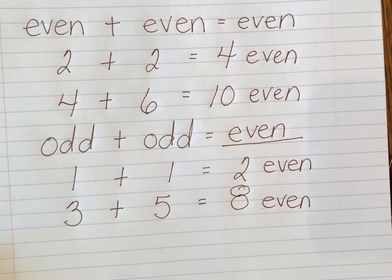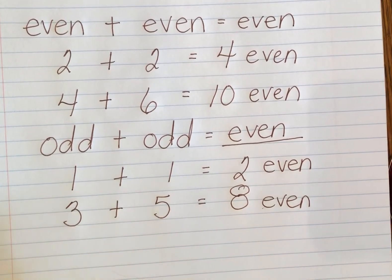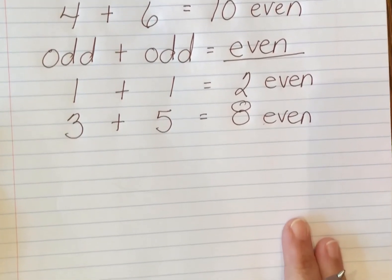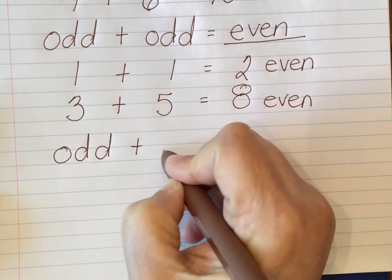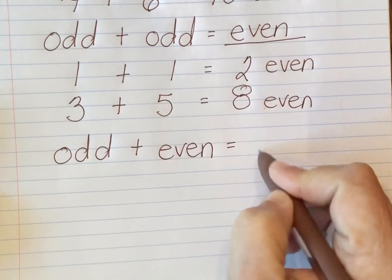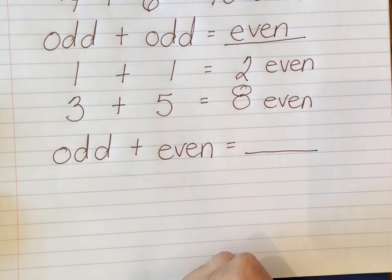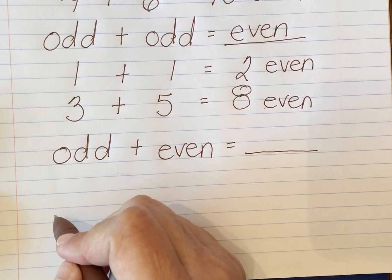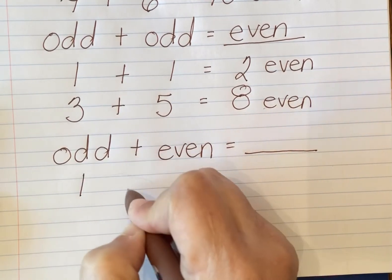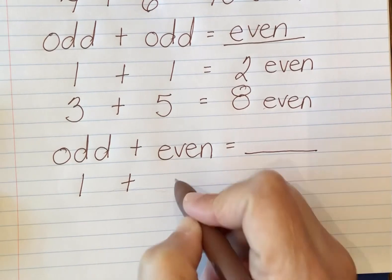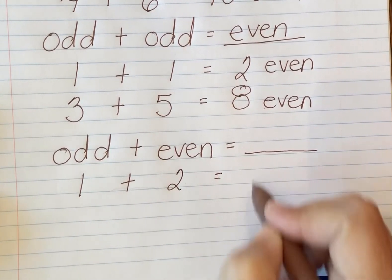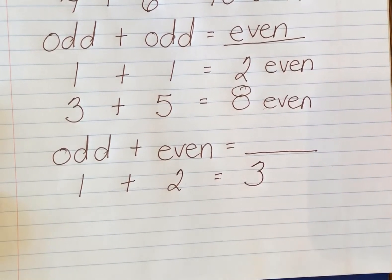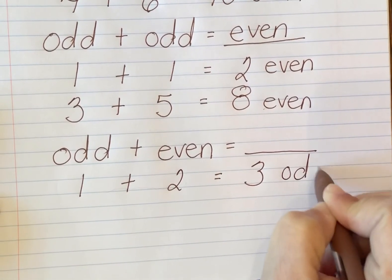What if I take an odd number and add an even number to it? Let's try that. If I start with an odd number and add an even number, what is my result going to be? I like to keep it simple, so let's start with one as my odd number, and two as my even number. One plus two equals three, and three is an odd number.